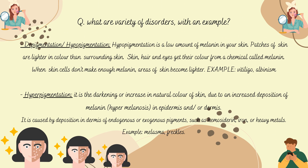Hypopigmentation is a low amount of melanin in the skin. Patches of skin are lighter in color than the surrounding skin. Skin, hair, and eyes get their color from a chemical called melanin. When skin cells don't make enough melanin, areas of skin become lighter. Examples include vitiligo and albinism.